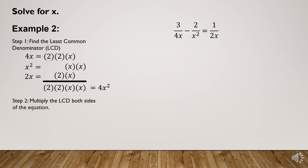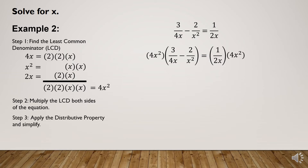Step number 2: Multiply the LCD to both sides of the equation. We obtain 4x² × [3/(4x) - 2/x²] = (1/2x) × 4x². Applying the distributive property and simplifying: 4x² × 3 gives 12x² over the denominator 4x.